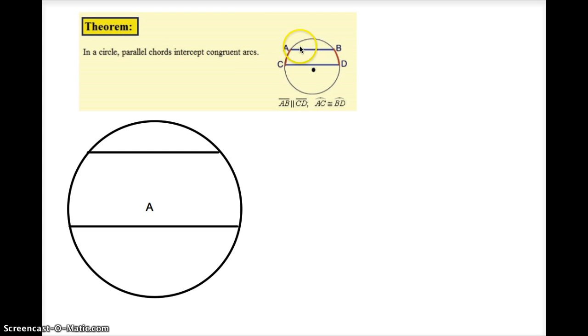Now what does that mean? Well if you remember what a chord is, it's a line segment whose endpoints are on the circumference of the circle. So that means AB is a chord and CD is a chord. Now if I know that these two are parallel, AB is parallel to CD,